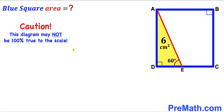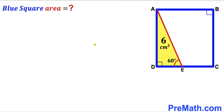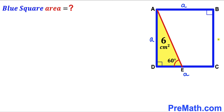Please keep in mind that this figure may not be 100% true to scale. Let's get started. We'll focus on the blue square ABCD and label its side length as lowercase a, so all sides of the square are lowercase a across the board.